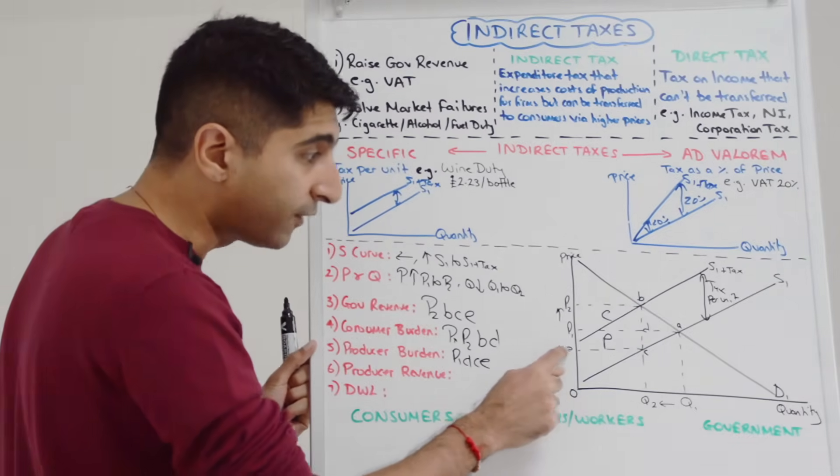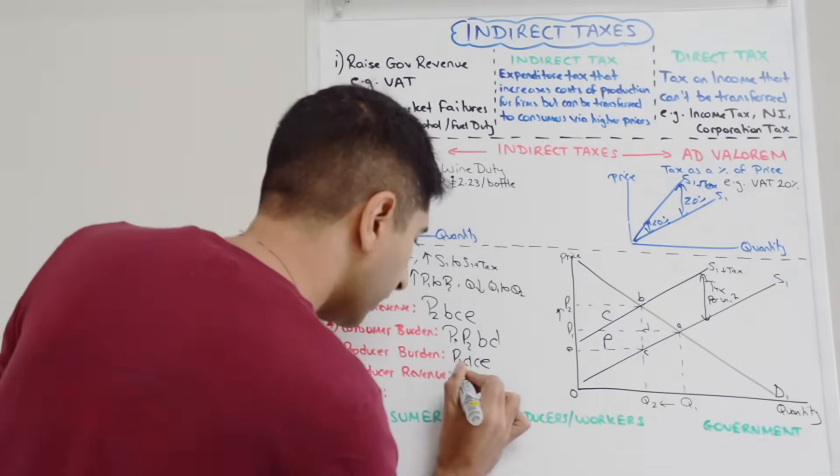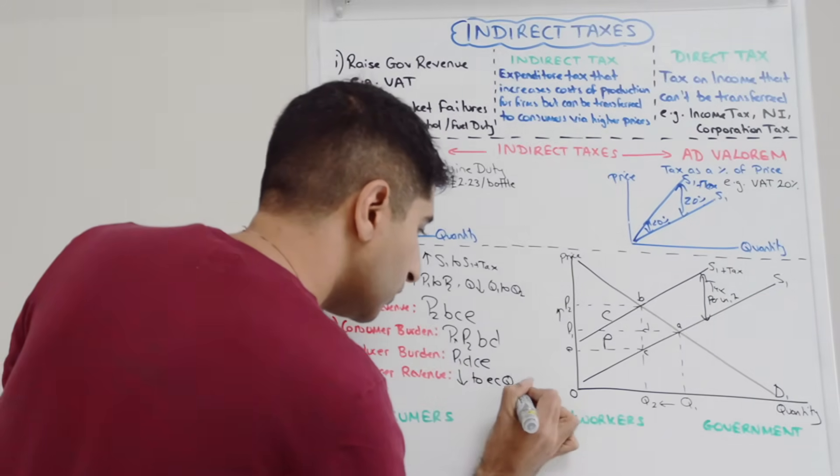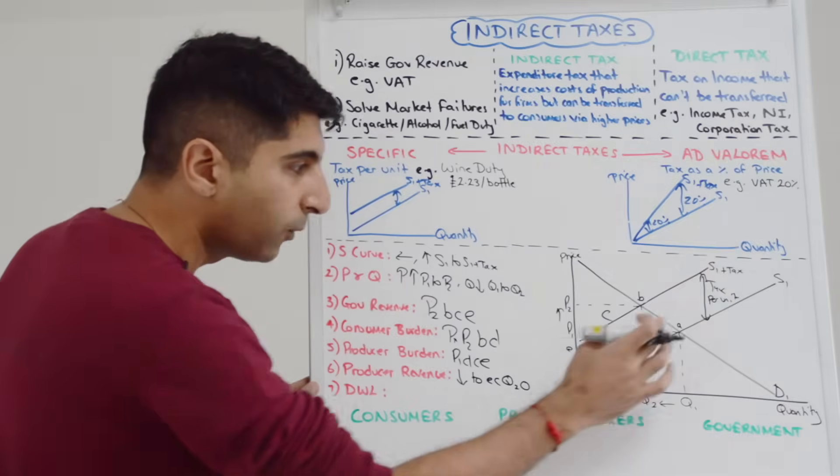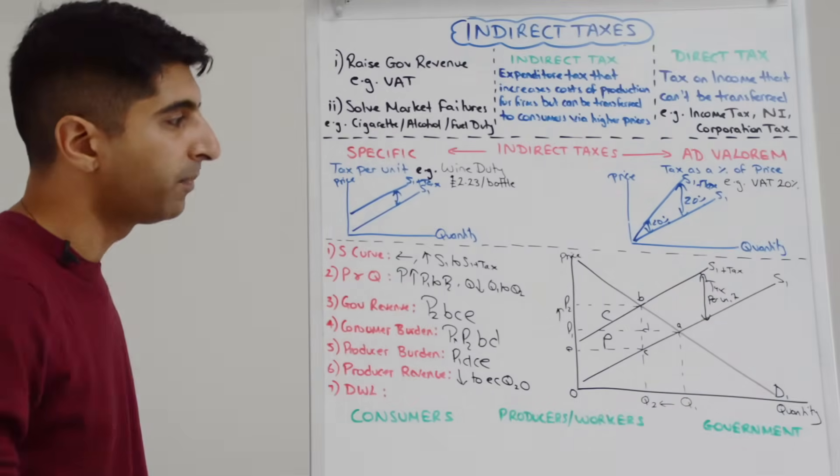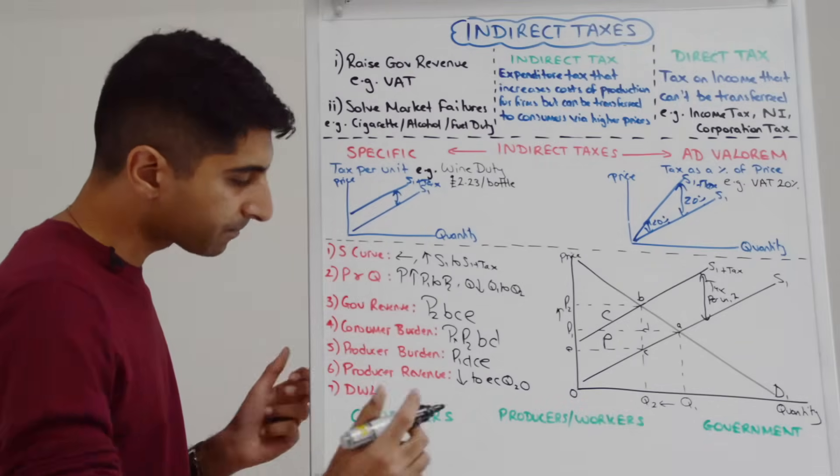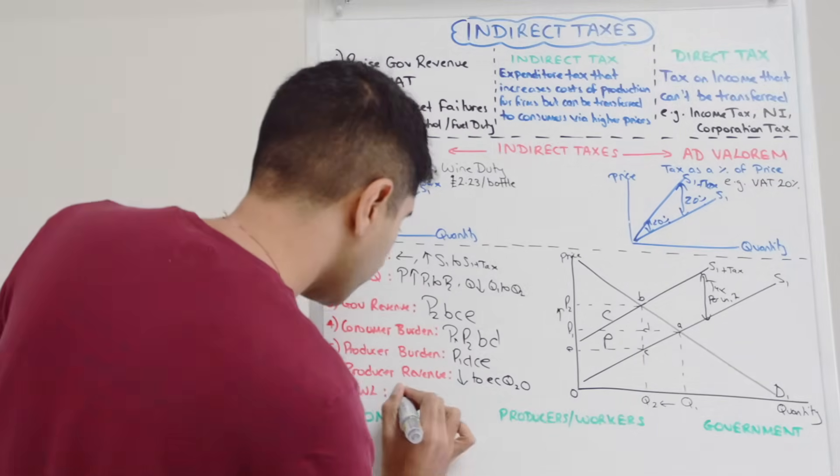And we can see that producer revenue is only ECQ20, so it's fallen, fallen to ECQ20 from P1AQ10. So a big fall in producer revenue. And also by the government intervening, reducing quantity in this market, there is a deadweight welfare loss of the triangle ABC.